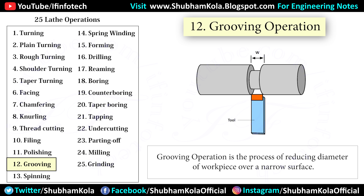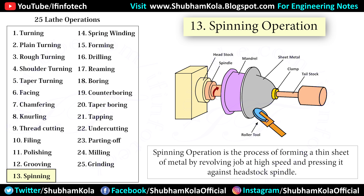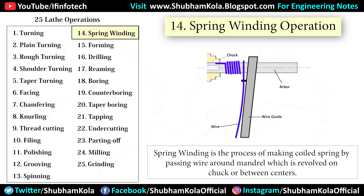Grooving is the process of reducing the diameter of a workpiece over a narrow surface, done using a grooving tool, which is similar to a parting tool. Spinning is the process of forming a thin sheet of metal by rotating the job at high speed and pressing it against the tailstock spindle, with support given from the tailstock end.